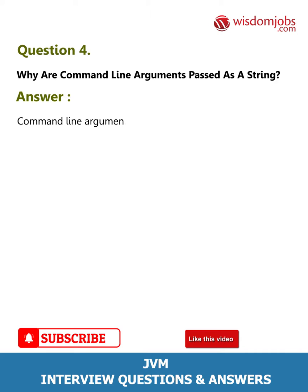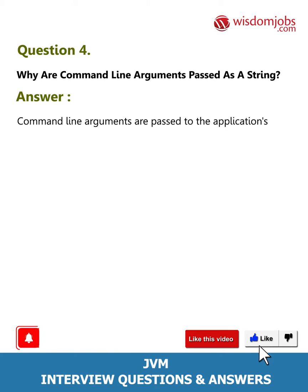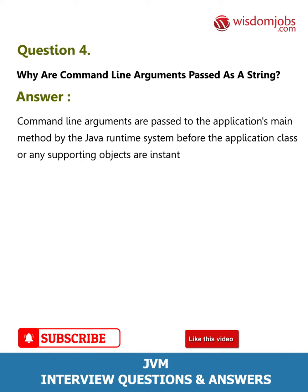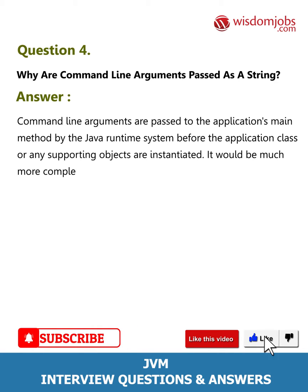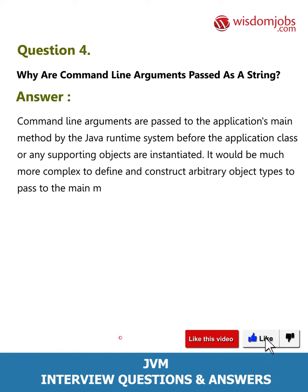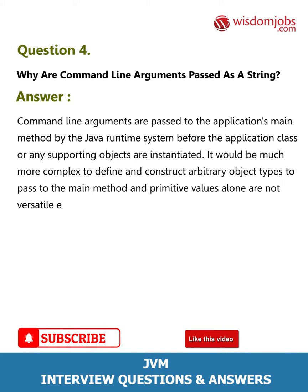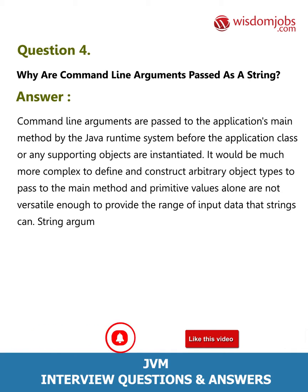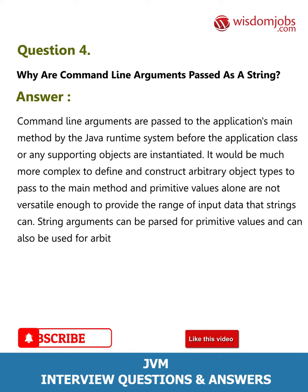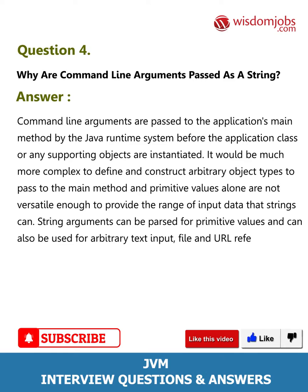Question 4: Why are command line arguments passed as a String? Answer: Command line arguments are passed to the application's main method by the Java runtime system before the application class or any supporting objects are instantiated. It would be much more complex to define and construct arbitrary object types to pass to main, and primitive values alone are not versatile enough. Strings can be passed for primitive values and also used for arbitrary text input, file, and URL references.